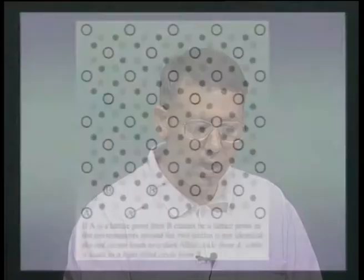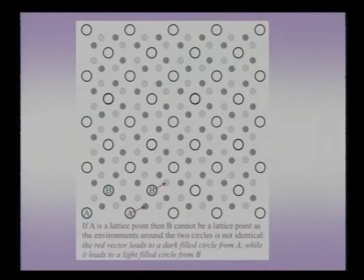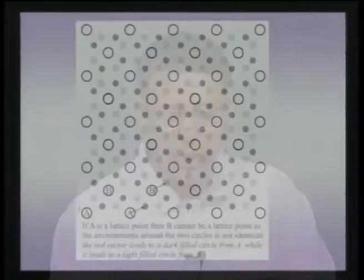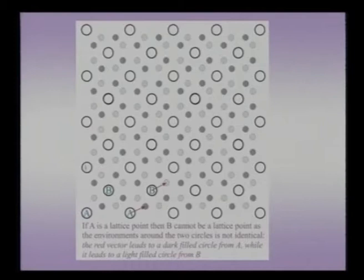Let us consider A and B as the two circles. If I look at A, by going along x then y, I land on a dark gray circle. If I do the same translation as shown by the red vector, I land on a light gray circle. This implies A and B do not have identical surroundings — both cannot simultaneously be lattice points. I can choose A as a lattice point, so all A's form the lattice. Equivalently, I could choose B's, but A and B cannot both be lattice points simultaneously because their environments are different.